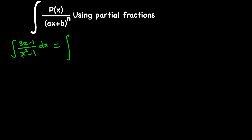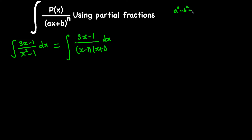I'm going to write the factors of this denominator in terms of linear factors, where the power of x is one. Right now it's a quadratic, so x squared minus 1 can be written as (x minus 1)(x plus 1) using the standard formula: a squared minus b squared equals (a minus b)(a plus b).